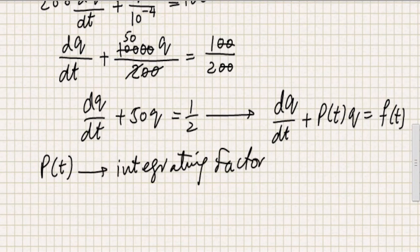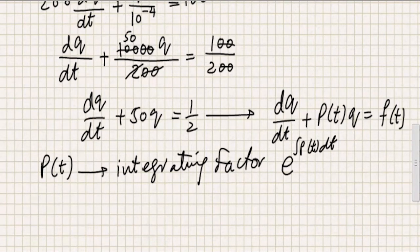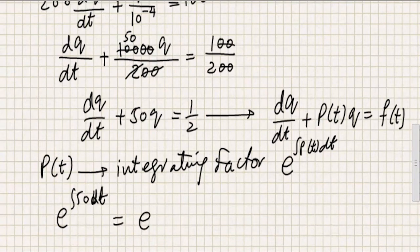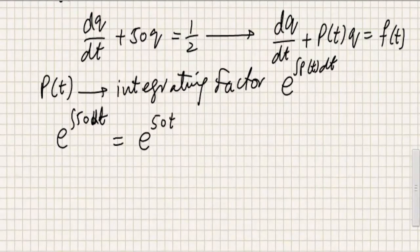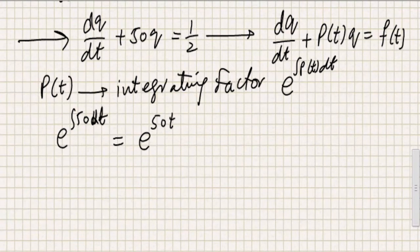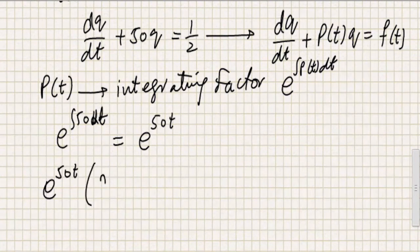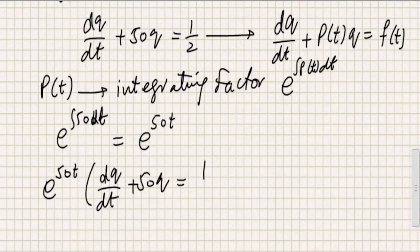So now I am going to write the integrating factor, which is e to the power integral P of T dt. So the integrating factor for this equation will be e to the power integral 50 dt, so we can integrate the power here and we'll get 50T. So we have the integrating factor, and the second step in this method was that you multiply all of this equation with the integrating factor. So I am going to write e to the power 50T into dQ by dt plus 50Q equal to 1 over 2.